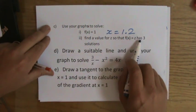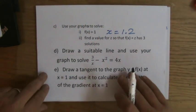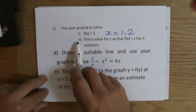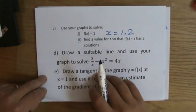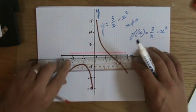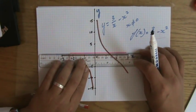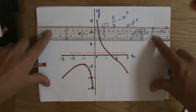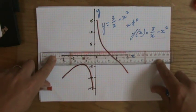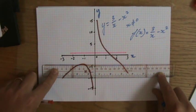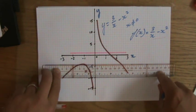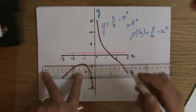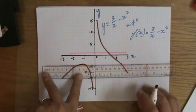Now, find a value for z so that f(x) = z has three solutions. That sounds very difficult, but consider: for f(x) = 1 we had one solution, x = 1.2. For many y-values there is exactly one solution, and for some values — like y = -4 — there are exactly two solutions.